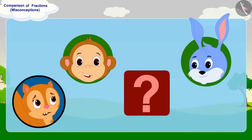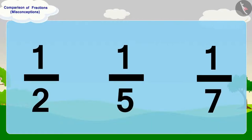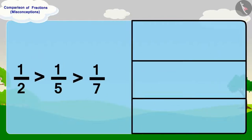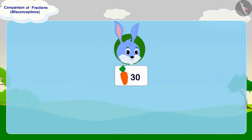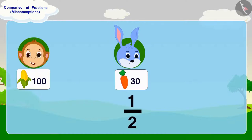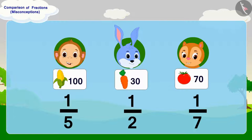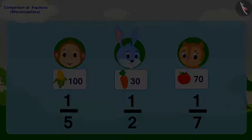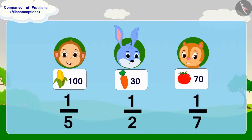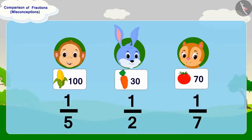If we only compare fractions, we will find that Banni is right because half is greater than one-fifth and one-seventh. But here, these are different items whose quantity is also different — like half of 30 carrots, one-fifth of 100 corns, and one-seventh of 70 tomatoes. The amount of vegetables of Babban, Banni, and Chandan are different. Therefore, we cannot tell who has given more vegetables by just comparing the fractions.